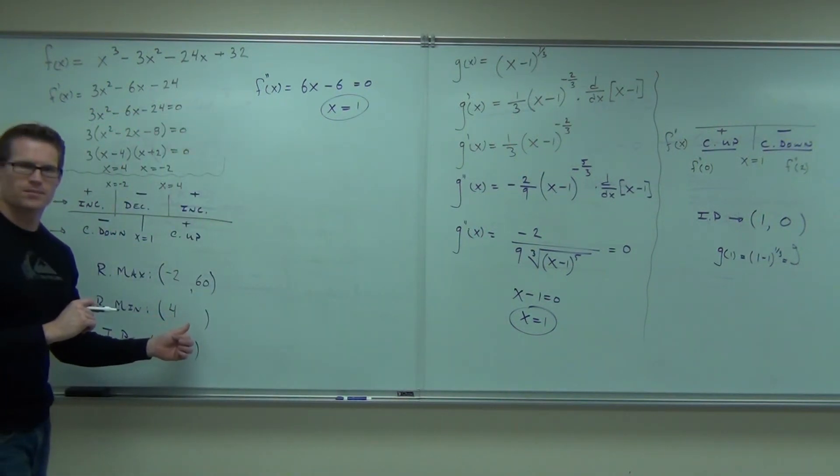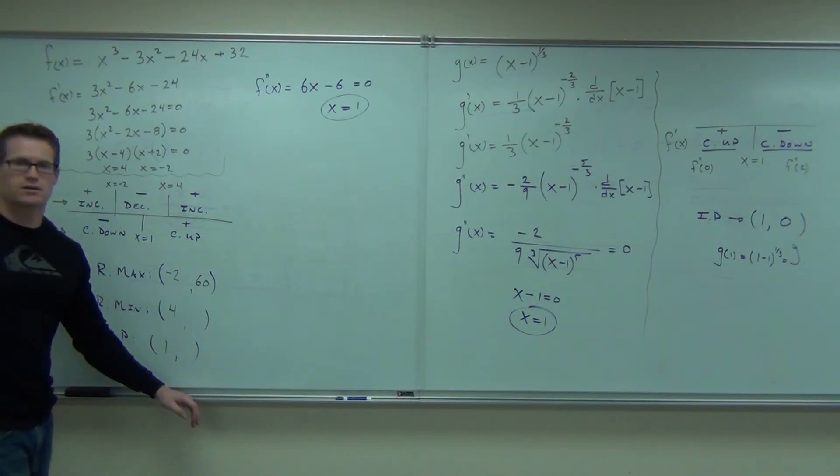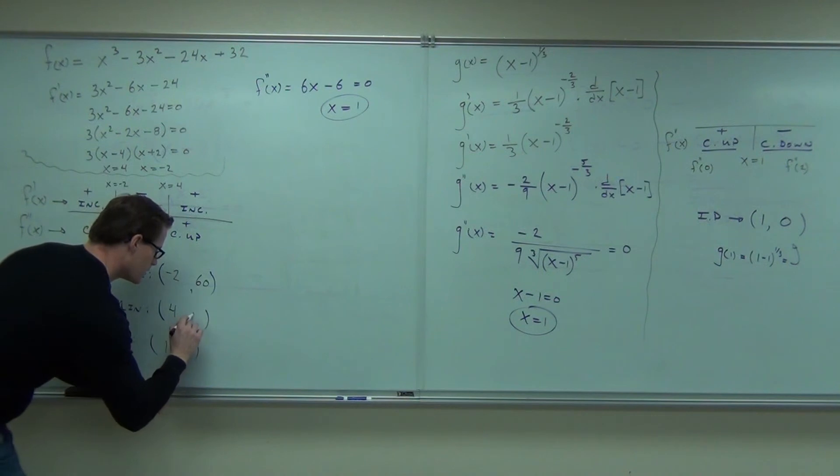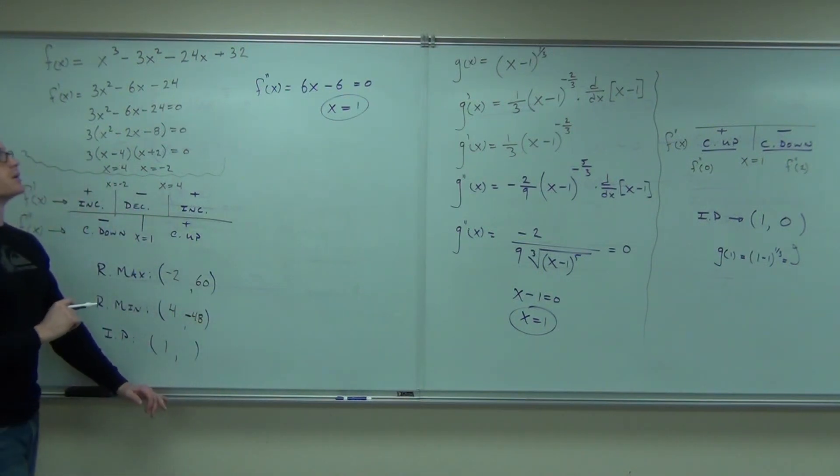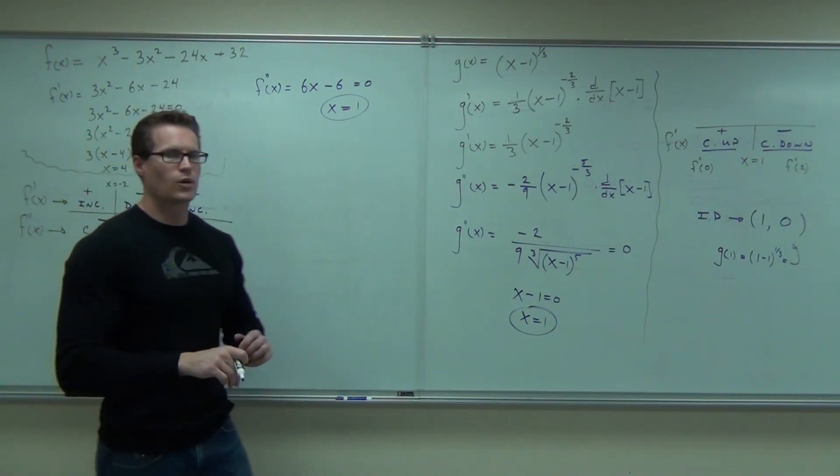The 4. Anyone do the 4? Negative 48. Negative 48? Double check. Yes? Yeah, negative 48. Perfect. Negative 48. And the 1? 6. 6? Double check. 6? Okay.